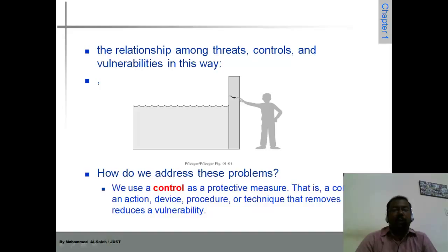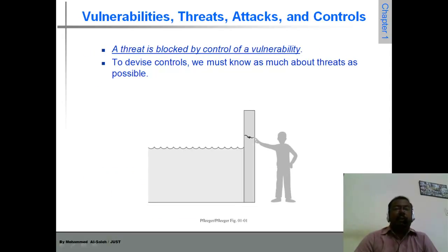So how do you address all these problems? We use a control as a protective measure. A control is an action, a device, a procedure, or a technique that removes or reduces a vulnerability. A threat is blocked by the control of a vulnerability. If you control the vulnerability, you can easily defend against the threat. To devise controls, you must know as much as possible about threats.